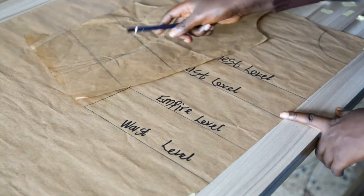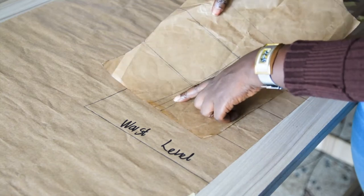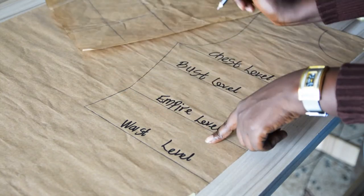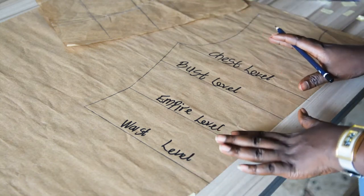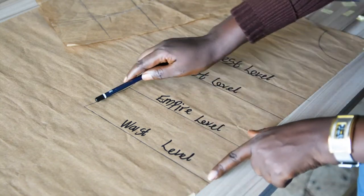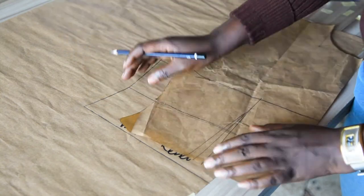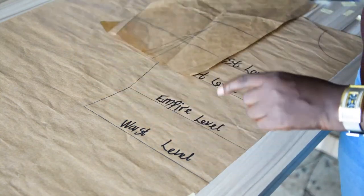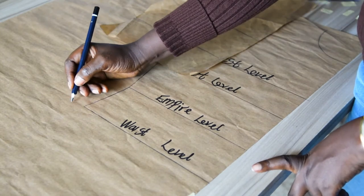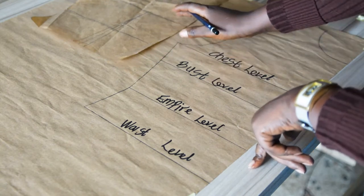The only thing I did not do is transfer the dart. I did not transfer the dart from my basic bodice block onto the fresh pattern paper because I will be plotting a fresh dart. On the waistline, I already added a one-inch dart allowance on my basic bodice block, so I have an extra one inch which I have to put into consideration when plotting my dart.